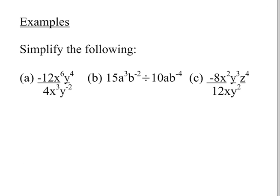So let's look at some examples. In this very first one, for example, we're going to just follow those steps. We're first going to start by dividing the coefficients. So negative 12 divided by 4 is negative 3.